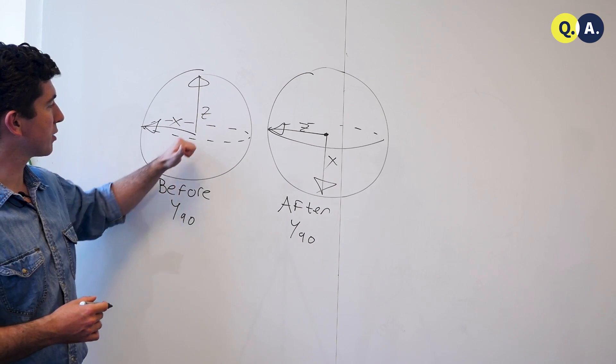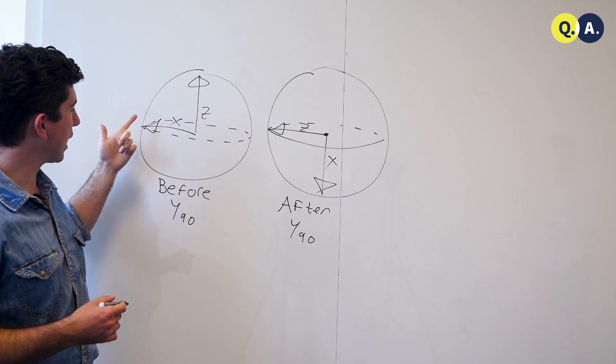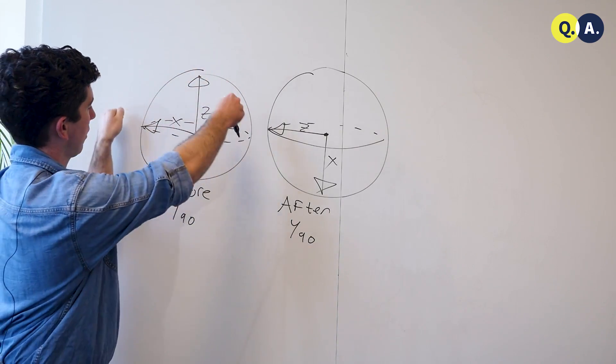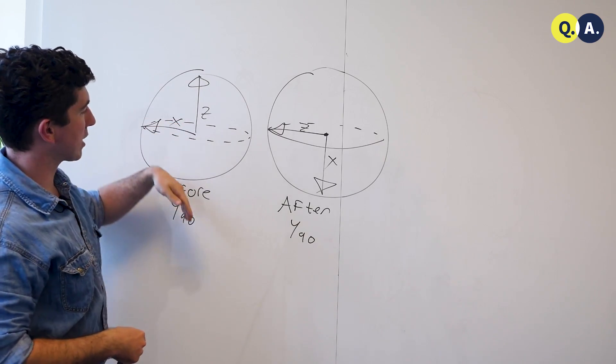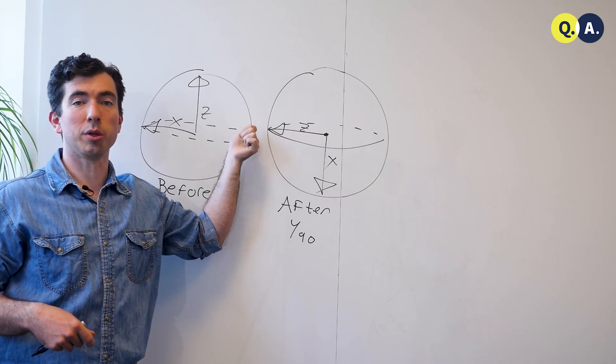If we write down a Bloch sphere with the y axis pointing out of the board, we can see the effect of a y90, a rotation around 90 degrees of the y axis, is just turning the sphere sort of like a steering wheel so that the x axis now faces down and the z axis is where the x axis used to be.